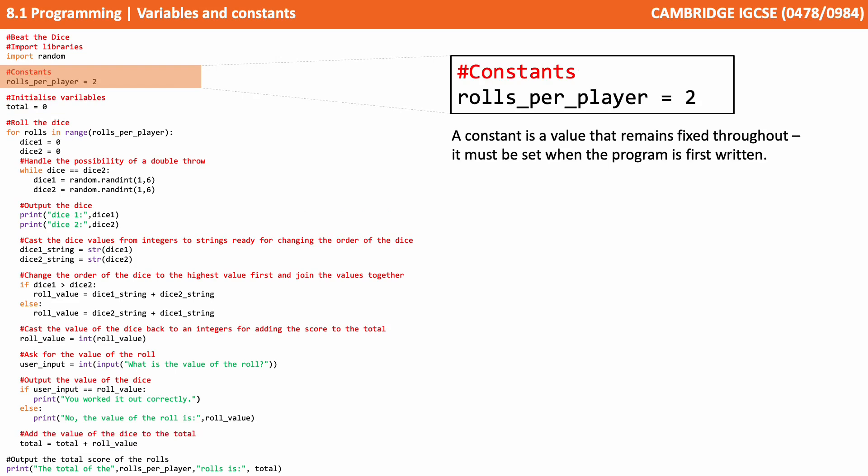Here we have a constant: roles per player equals 2. It looks exactly the same in nature as the variables we were looking at earlier, but a constant is a value that remains fixed throughout. It must be set when the program is first written. The value of a constant must remain constant — it can't change or be updated while the program is running. That's really how it differs from a variable; otherwise you can use them the same way.